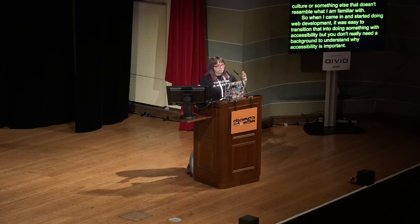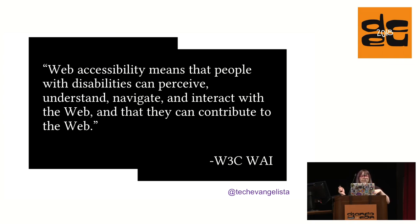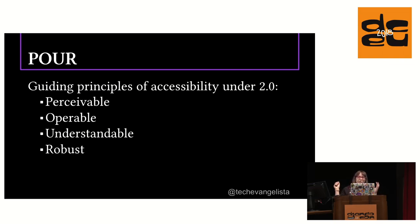What is web accessibility? Web accessibility means that people with disabilities can perceive, understand, navigate, and interact with the web, and they can contribute to the web. That's the official World Wide Web Consortium, or W3C's, definition. They have a group called the Web Accessibility Initiative, and those are the people behind the Web Content Accessibility Guidelines, or WCAG. The acronym to remember the guiding principles of WCAG 2.0 is POUR: Perceivable, Operable, Understandable, and Robust.